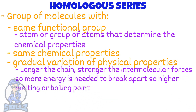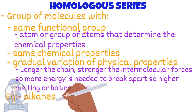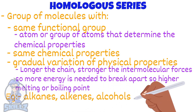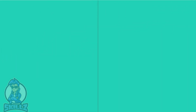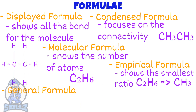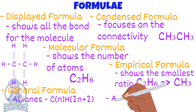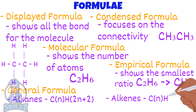A few examples of homologous series include alkanes, alkenes, alcohols, and esters. Back to general formula: the general formula of alkanes is CnH(2n+2). Alkenes is CnH2n.